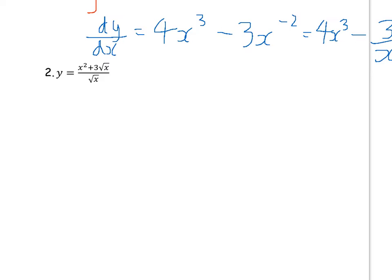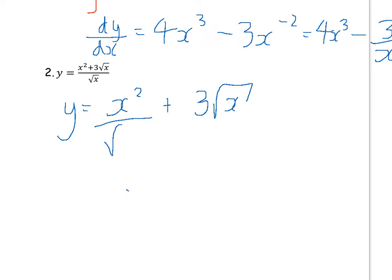Next example: y equals x squared plus three times the square root of x, all over the square root of x. So y equals x squared plus three over the square root of x. We're going to split this into two fractions again, with the common denominator being the square root of x.